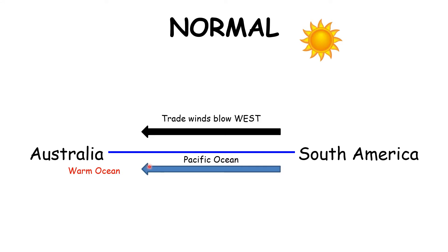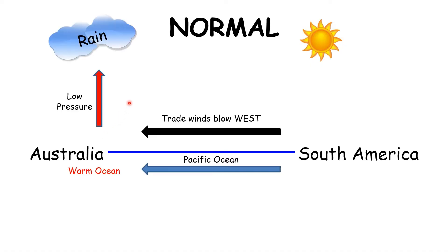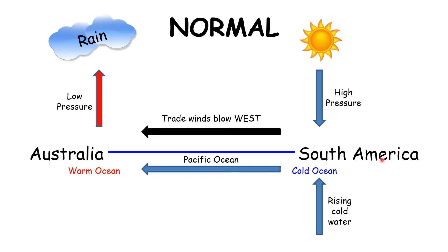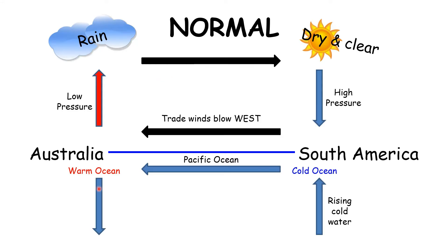Because Australia is experiencing a warm ocean, the air above the ocean is warm too. Hot air rises, and as the air rises the moisture in it will cool and condense, forming clouds and rain within Australia. Because the surface waters of the Pacific Ocean have been moved to the west, rising cold water comes from deep down within the ocean to replace it. This means where South America is, it's going to be a cooler ocean. With a cooler ocean, air sinks above it, clouds do not form, and you end up with dry and clear conditions in South America. Within the ocean, waters will sink where Australia is and then loop back to where South America is to the east.